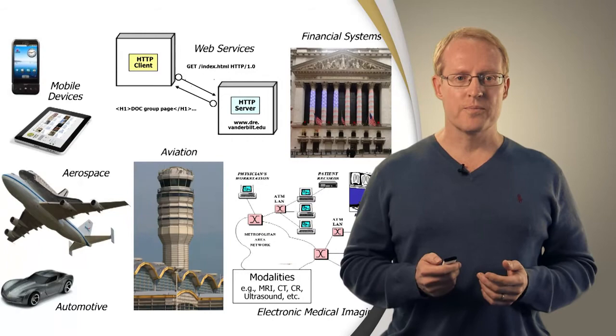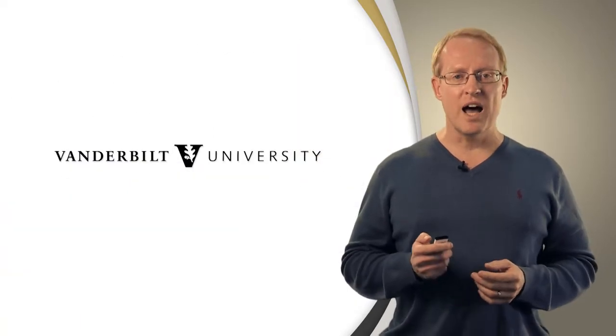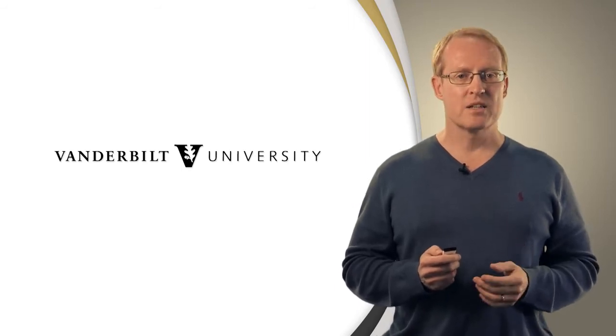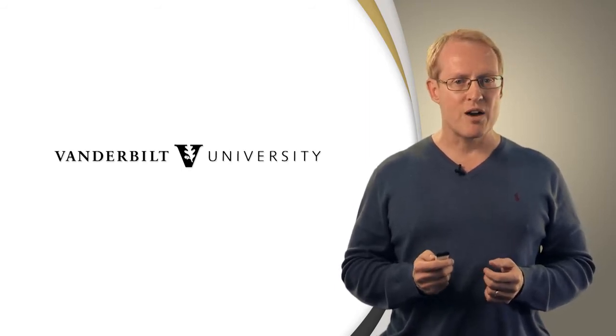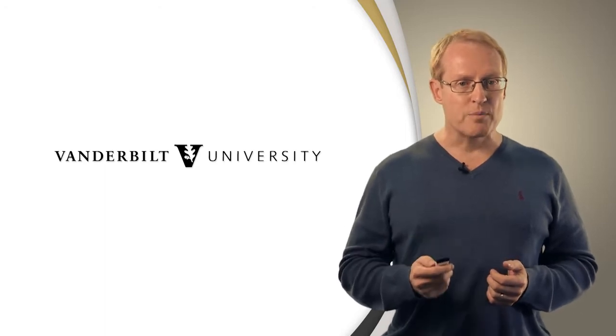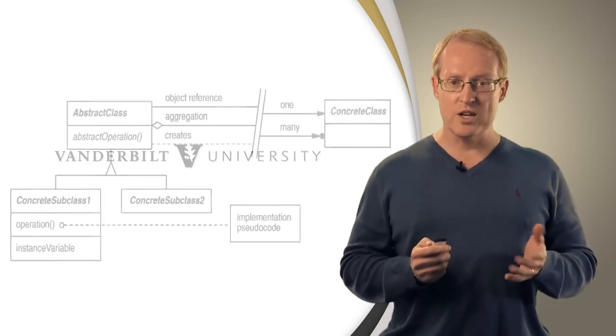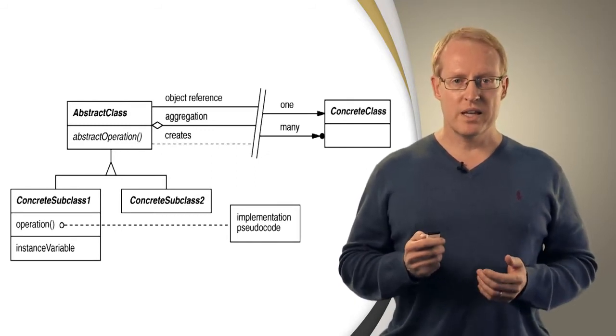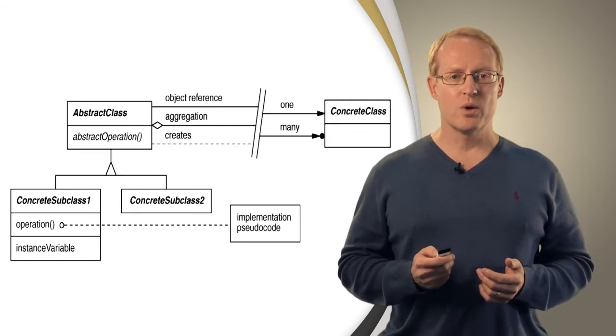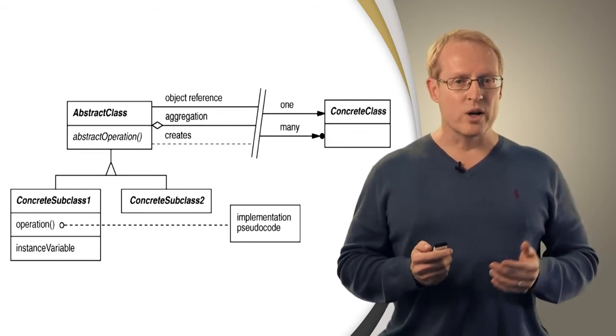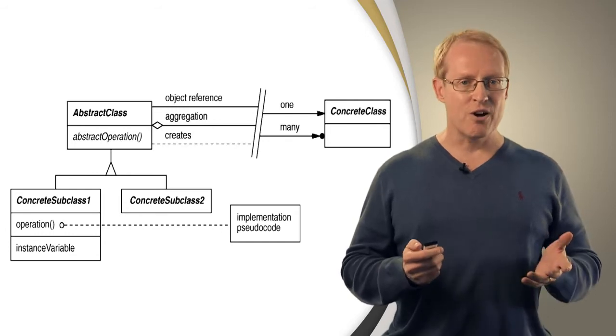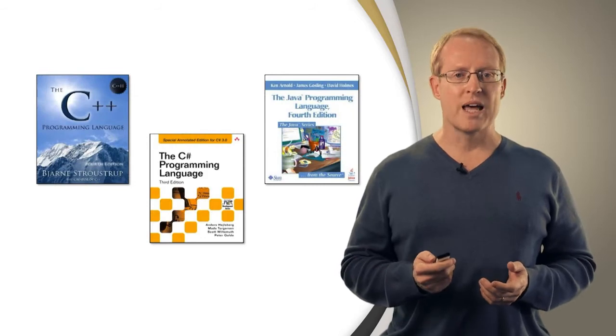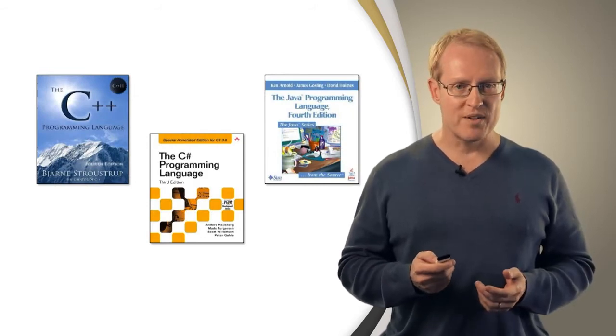Over the coming weeks and months, I'll illustrate by example how patterns and frameworks simplify and enhance the development of concurrent and network software via object-oriented design concepts and notations, such as encapsulation, abstraction, polymorphism, extensibility, and the unified modeling language, UML. Object-oriented programming language features, such as classes, inheritance, dynamic binding, and parameterized types, that are available in popular programming languages such as C++, Java, and C Sharp.